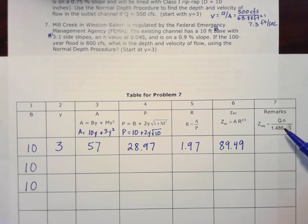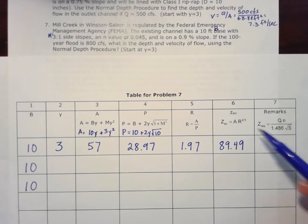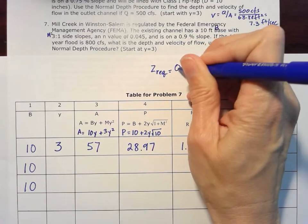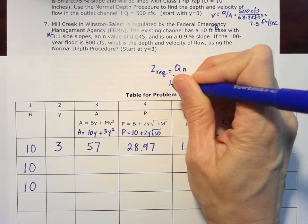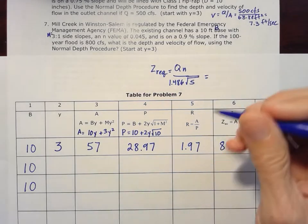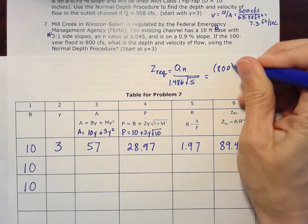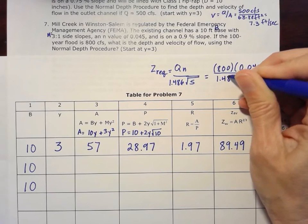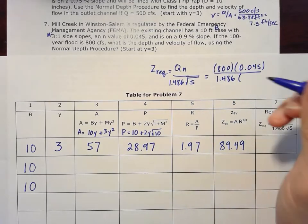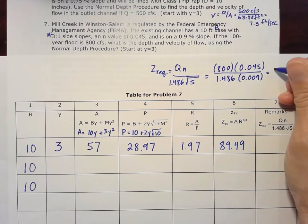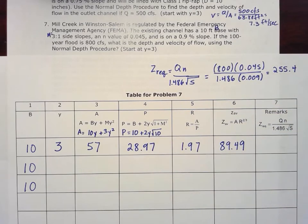Now we want to compare this to a value called Z required, which we get from the Manning equation, talking about that area times hydraulic radius to the 2/3. In this case my Z required, I'm going to follow that formula that it's flow rate times Manning's N over 1.486 conversion factor times square root of slope in decimal form. So my Q in this case is 800, that Manning's N of 0.045, conversion factor 1.486, and then square root of slope in decimal form, so 0.009, and we get 255.4 for that Z required.